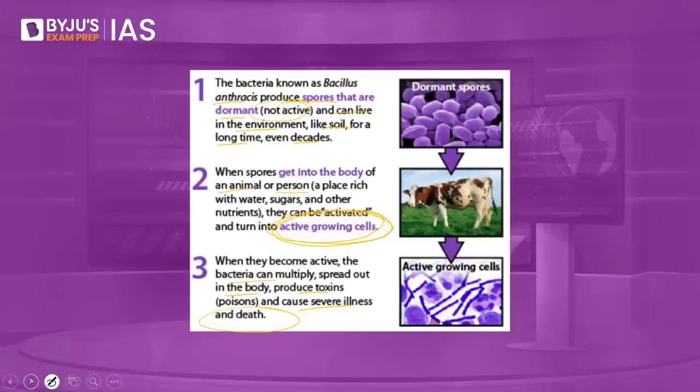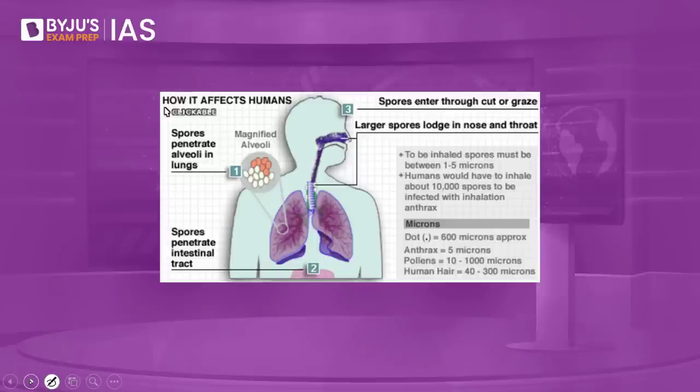How does anthrax infect human beings? People can get sick with anthrax if they come in contact with infected animals or contaminated animal products. It is important to remember that in human beings, anthrax is non-contagious. There have been instances where person-to-person transmission has occurred, but such instances are rare. Spores can penetrate into the alveoli in the lungs and into the intestinal tract, or enter through a cut or graze.